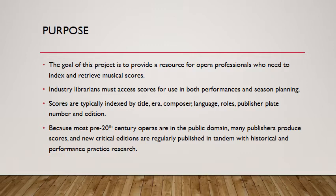Because most operas before the 21st century are in the public domain, many different publishers produce scores, and these scores exist in several formats. Full scores contain the music for the soloists, chorus, and orchestra in large folios used by the conductors in the orchestra pit. Vocal scores have just the soloist and choral music with the piano line, also called a reduction, underneath. Orchestra parts have just the lines needed for individual instruments. All of these items are expensive to purchase, vary in quality from publisher to publisher, and are constantly being edited and reissued to keep pace with current musicological research.